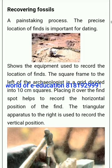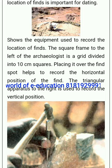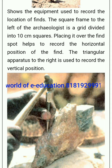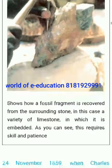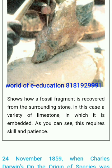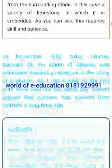Recovering fossils is a painstaking process — the precise location of finds is important for dating. The square frame to the left of the archaeologist is a grid divided into 10 cm squares; placing it over the find spot helps to record the horizontal position of the find. The triangular apparatus to the right is used to record the vertical position. A fossil fragment is recovered from the surrounding stone — in this case a variety of limestone — in which it is embedded. As you can see, this requires skill and patience.